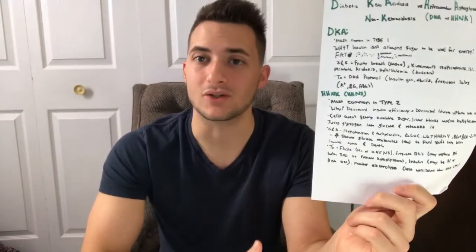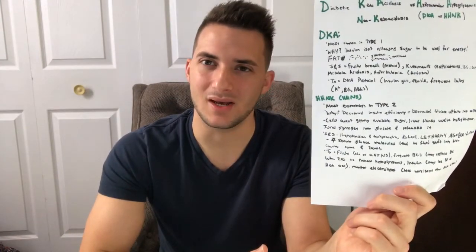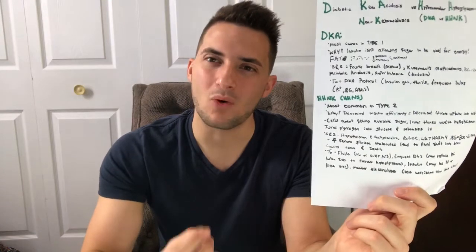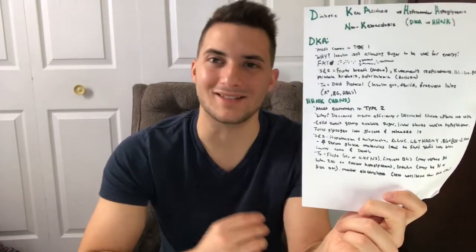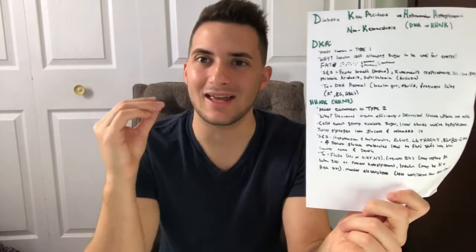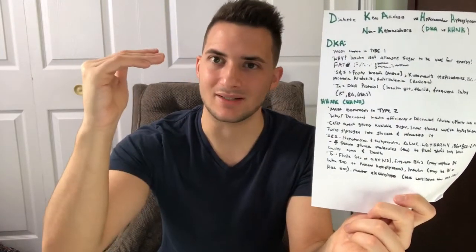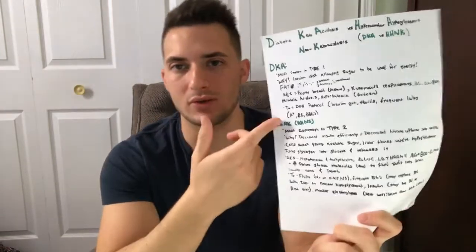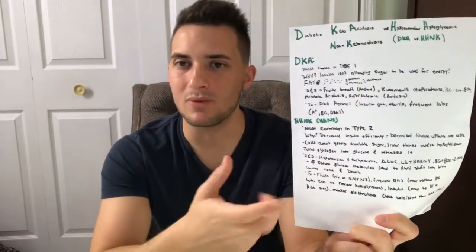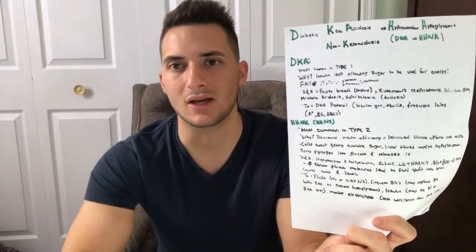We monitor their electrolytes — it's less worrisome than in DKA, but still important in HHNK. If they're getting insulin, is their potassium going low? Whereas in DKA, potassium goes high because they're acidotic, then goes low because we're giving insulin — much more worrisome. But we still monitor electrolytes in HHNK.